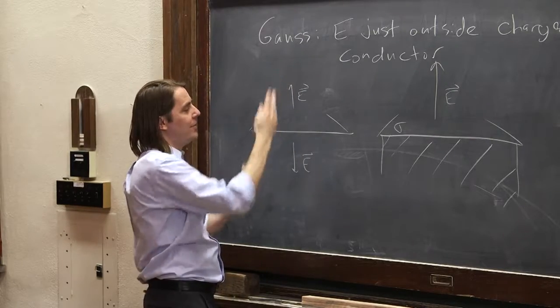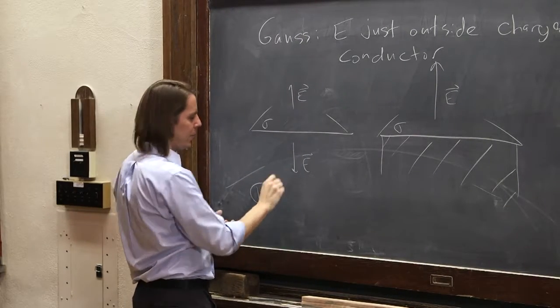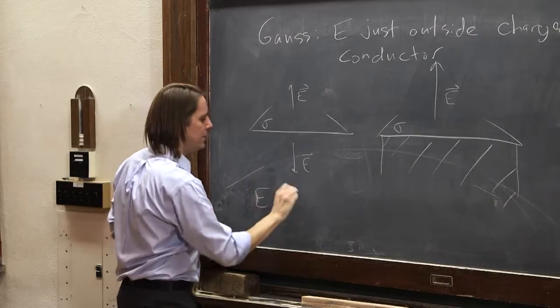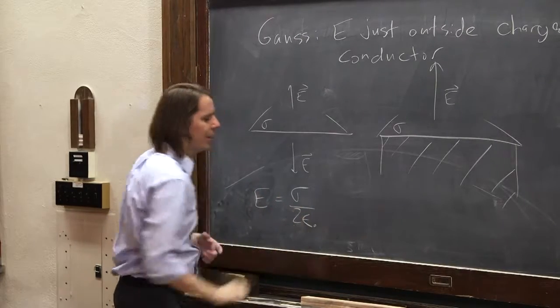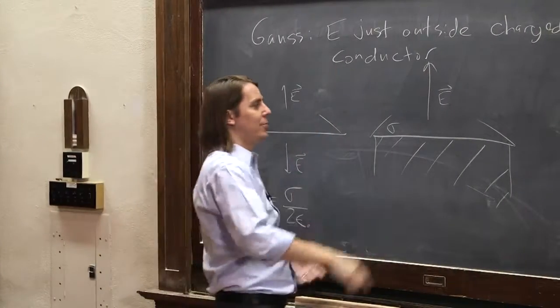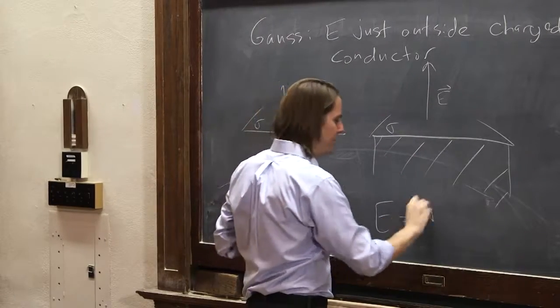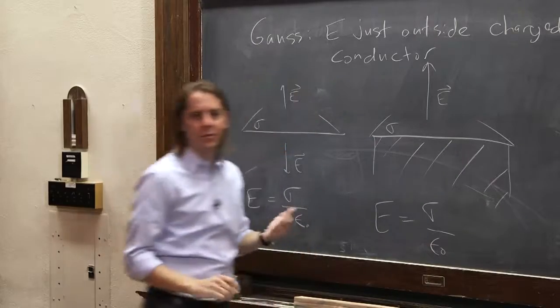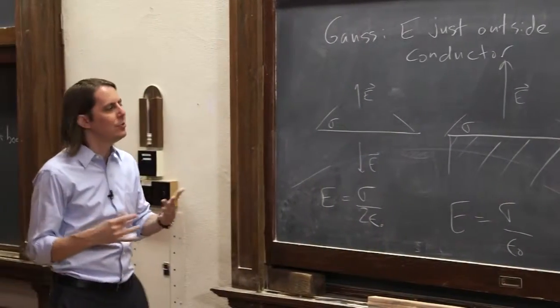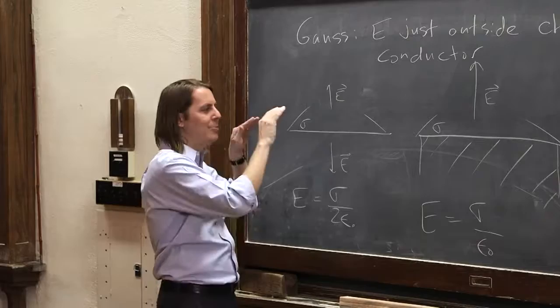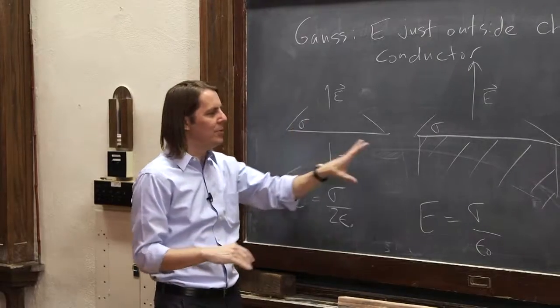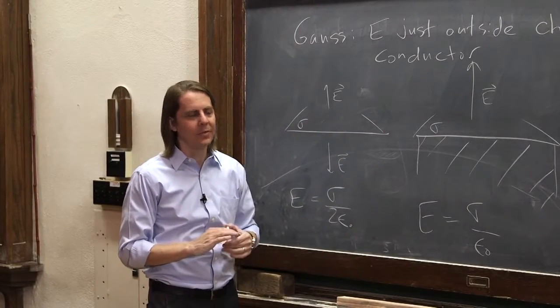E is sigma over 2 epsilon naught. But if it only has to create it on one side, if it throws all of its charge making excitement into one side, then it's just over epsilon naught. So it's physically two different situations. That's really the reason. They are not the same. Even though they are both a plane of charge, one is in free space, one is sitting over metal. That's the reason.